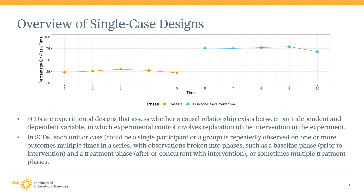Single case designs, also sometimes called single case experimental designs or single subject designs, are experimental designs that have the goal of assessing whether there is a causal relationship between some intervention and an outcome. These designs are a form of interrupted time series designs and can provide rigorous experimental evaluations of intervention effects.